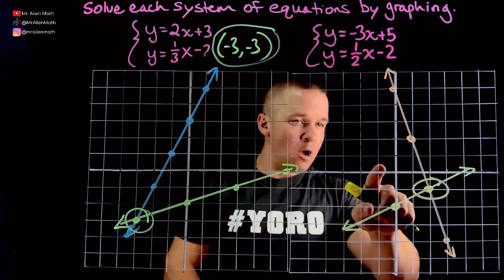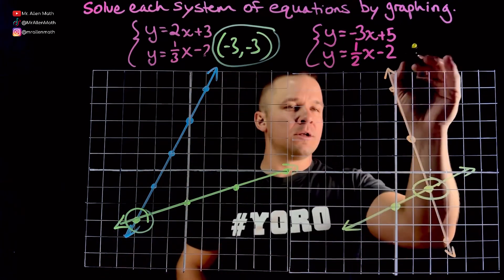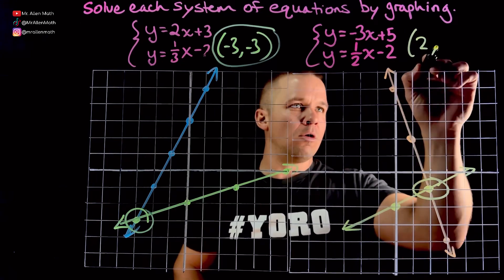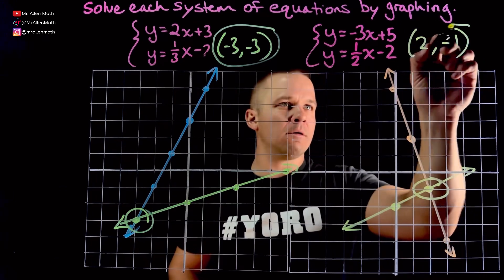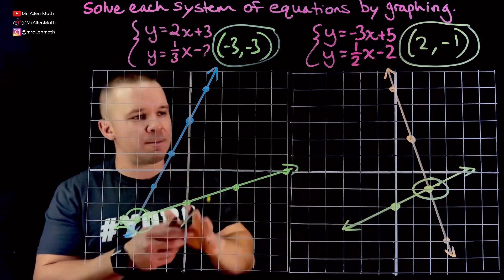There's my solution, which is, let's see here. 1, 2, down 1. So we get 2, comma, negative 1. There we go. That's my answer. Got my graph as well.